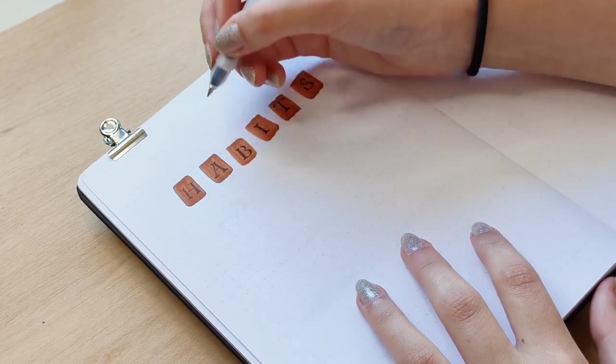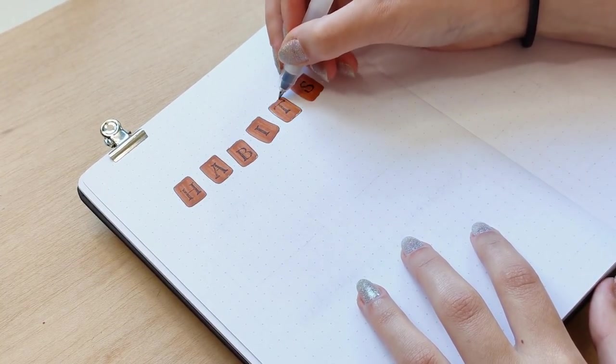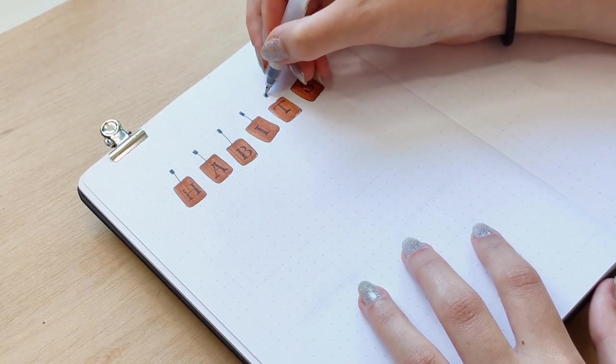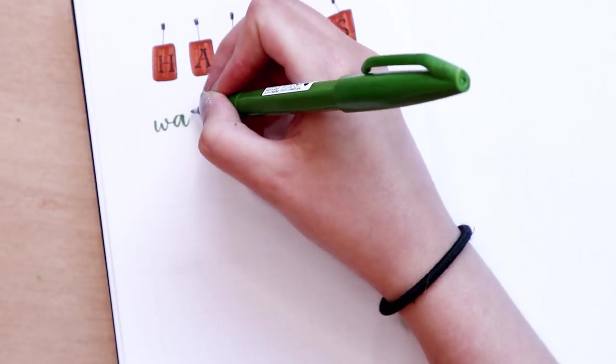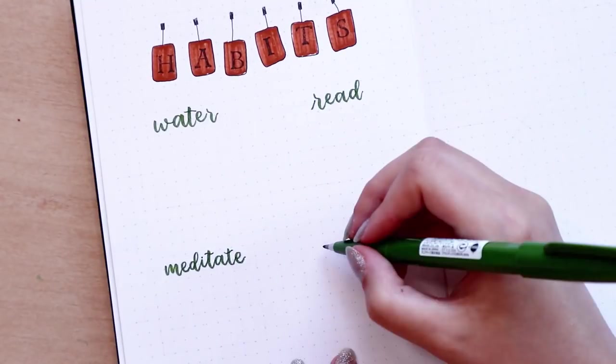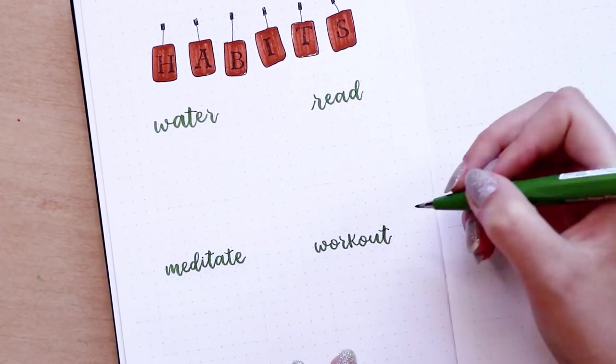Next up I have my habit tracker. I'm drawing 4 individual calendars for the spread to look like they are little cards or pieces of paper attached to the grid board. This month I'm tracking 4 habits: my water intake, meditation, read and workout.